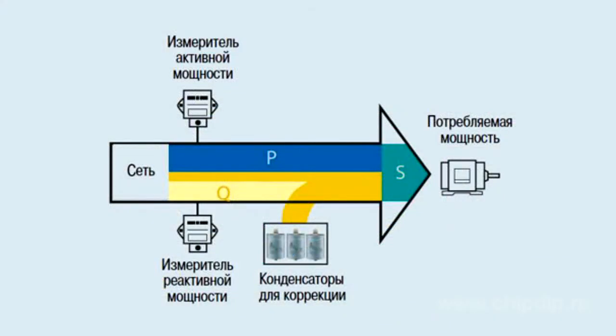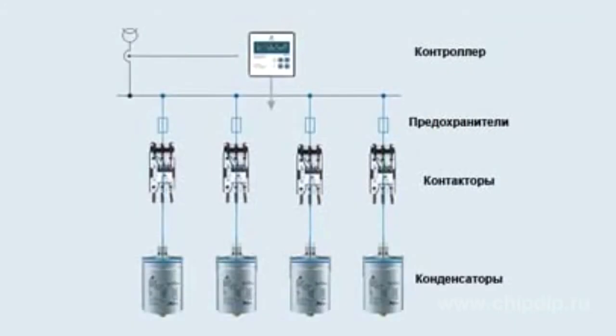Reactive power correction systems reduce the reactive component of the current flowing through the supply. When the nature of the load is changed, the correction circuits must be accordingly adjusted. This is usually carried out by automated correction systems, which perform stepwise connection or disconnection of individual correction capacitors.